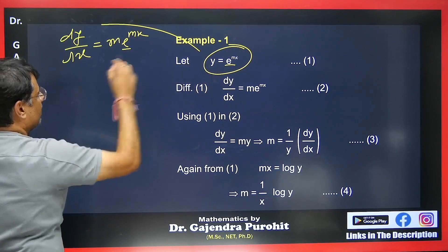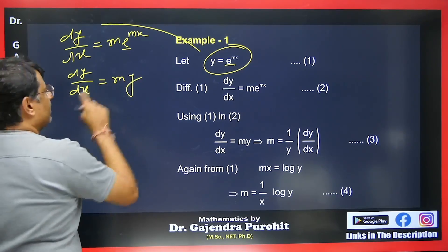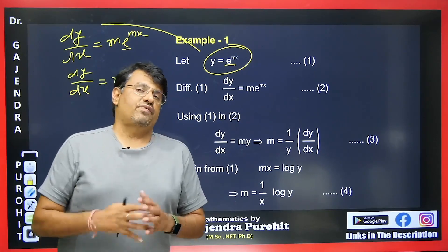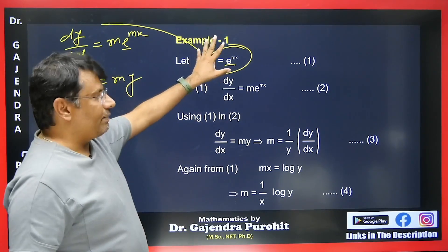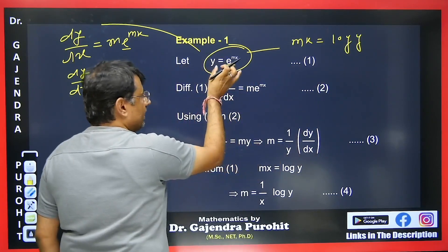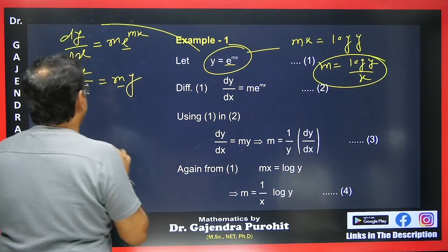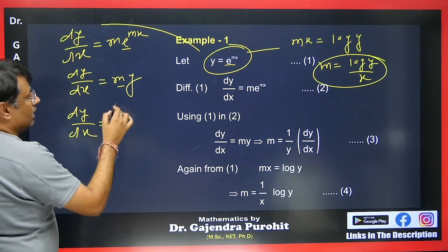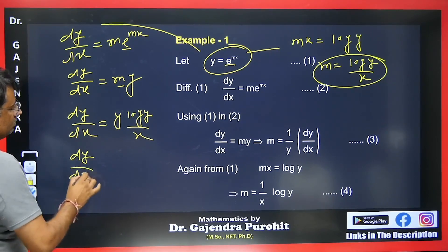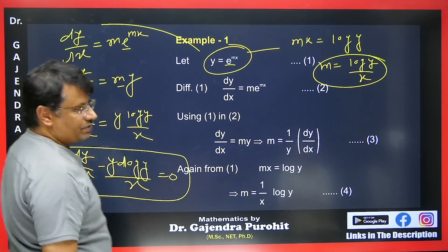Since m is still present we need to eliminate it. We take the log of y = e^(mx) to get log y = mx, so m = (log y)/x. Substituting back: dy/dx = y·(log y)/x. Rearranging, the differential equation is dy/dx − (y·log y)/x = 0.